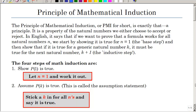In this lesson we're going to learn to prove some statements by using the principle of mathematical induction, or PMI for short. It is a property of the natural numbers we either choose to accept or reject. In English it says that if we want to prove that a formula works for all natural numbers n, we start by showing it is true for the first one — that's the base step — and then show if it is true for a generic number we call K, it must be true for the next natural number K plus one. That's the inductive step.